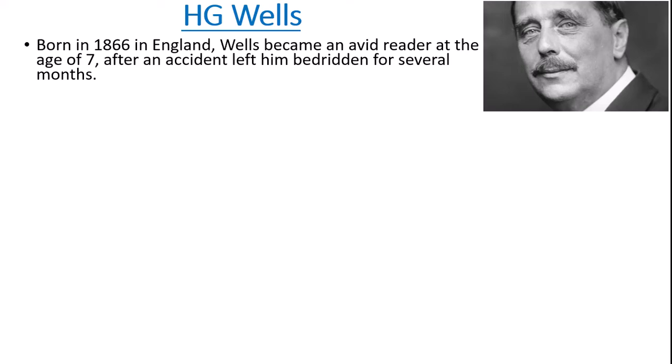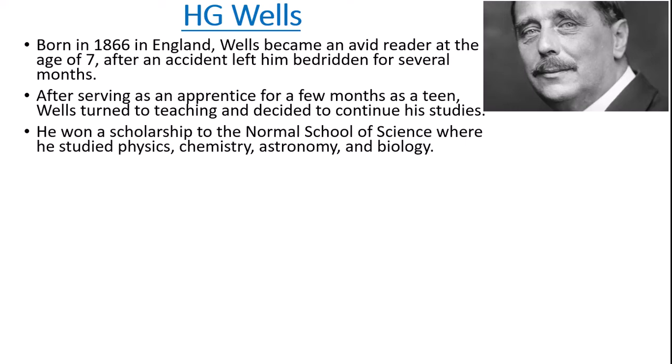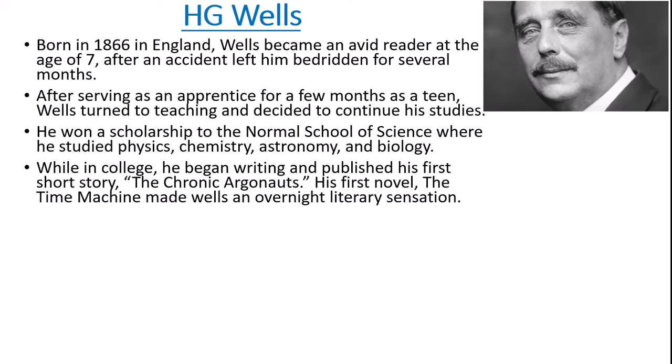There we have our author, H.G. Wells. Born in 1866 in England, Wells became an avid reader after an accident left him bedridden for several months. As a teenager, he was an apprentice for a few months, but then wanted to turn to teaching and decided to continue his studies — furthering his education rather than going into the apprenticeship and workforce. He had a scholarship to the Normal School of Science where he studied physics, chemistry, astronomy, and biology, things that would inform a lot of his writing later on. He began to write around this time, and his short story The Chronic Argonox was published while he was still in college. His first novel, The Time Machine, really made him an overnight literary sensation.